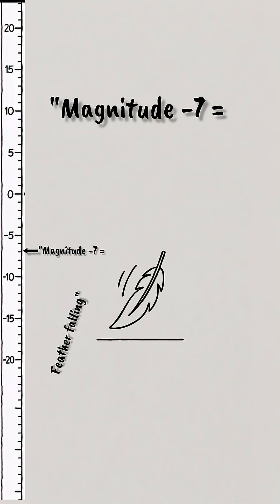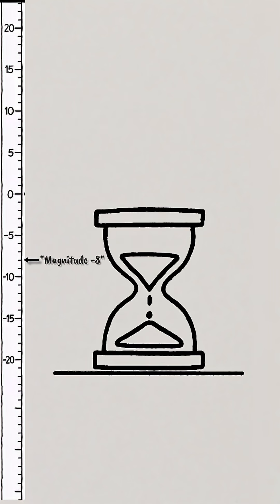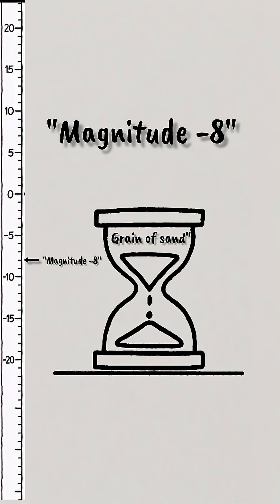Negative seven is a single feather fluttering to the ground. A fine grain of sand falling onto the pile at the bottom of a tiny hourglass would be a magnitude eight quake.